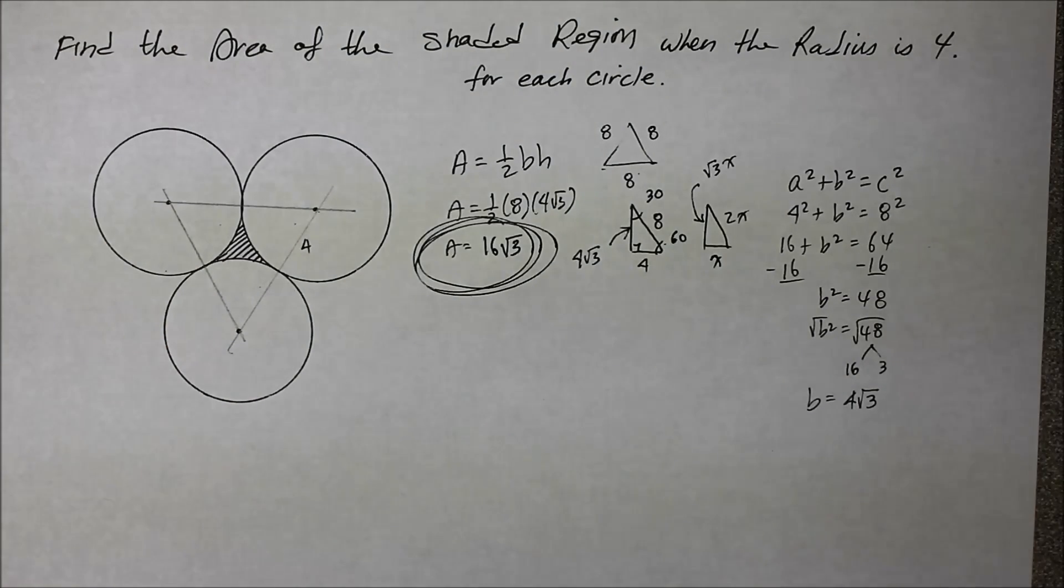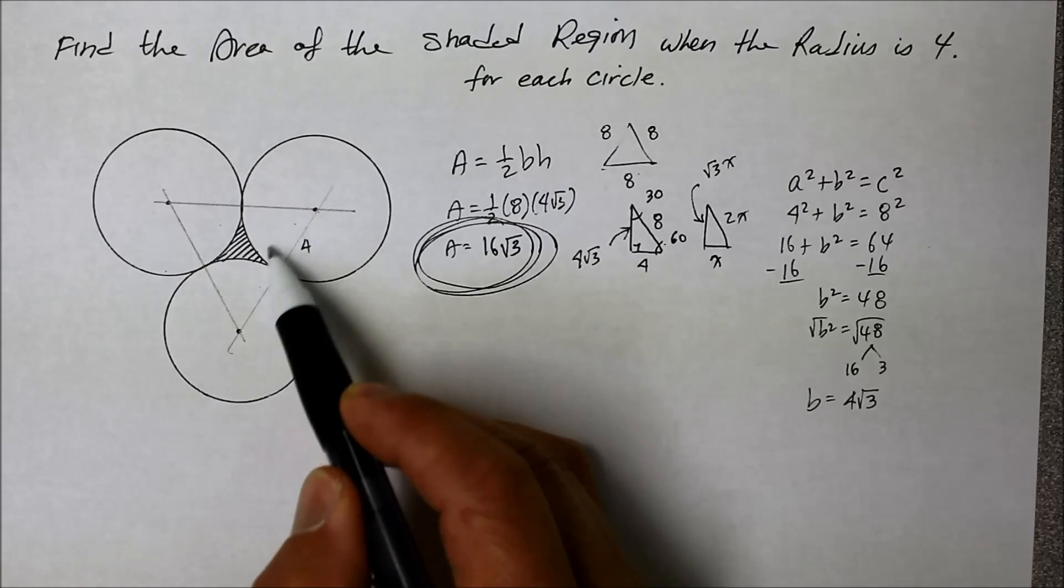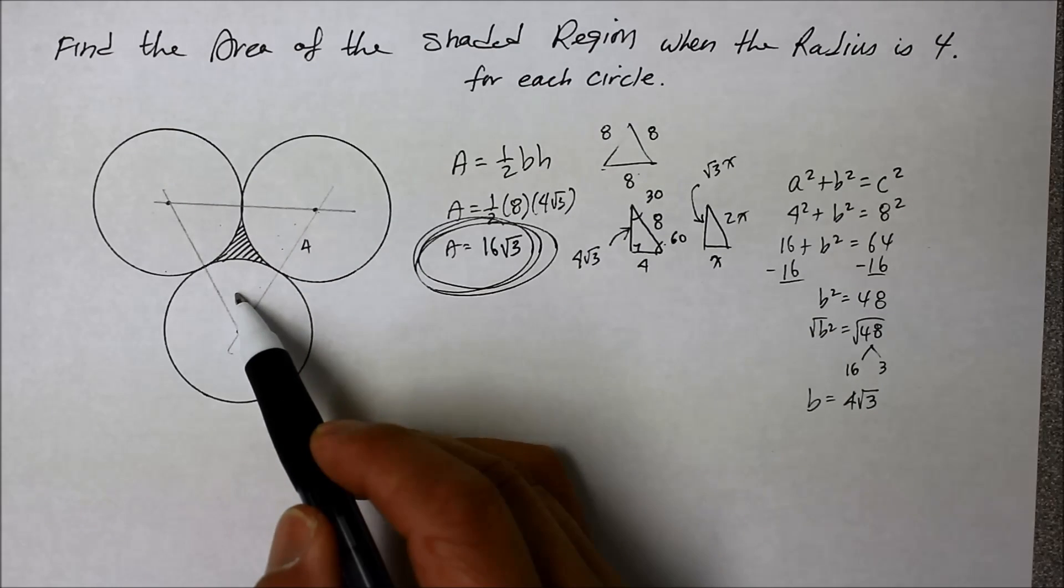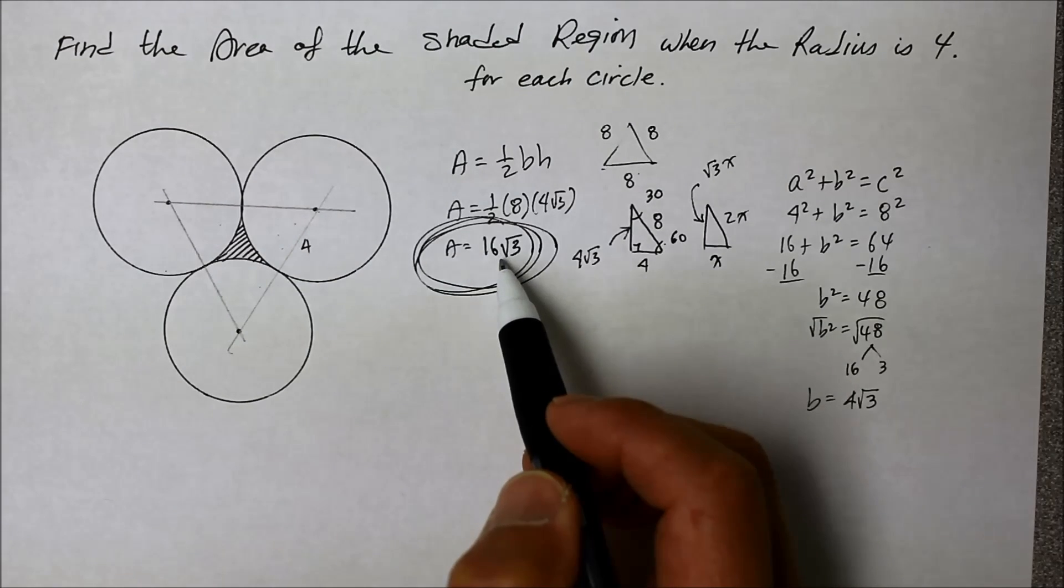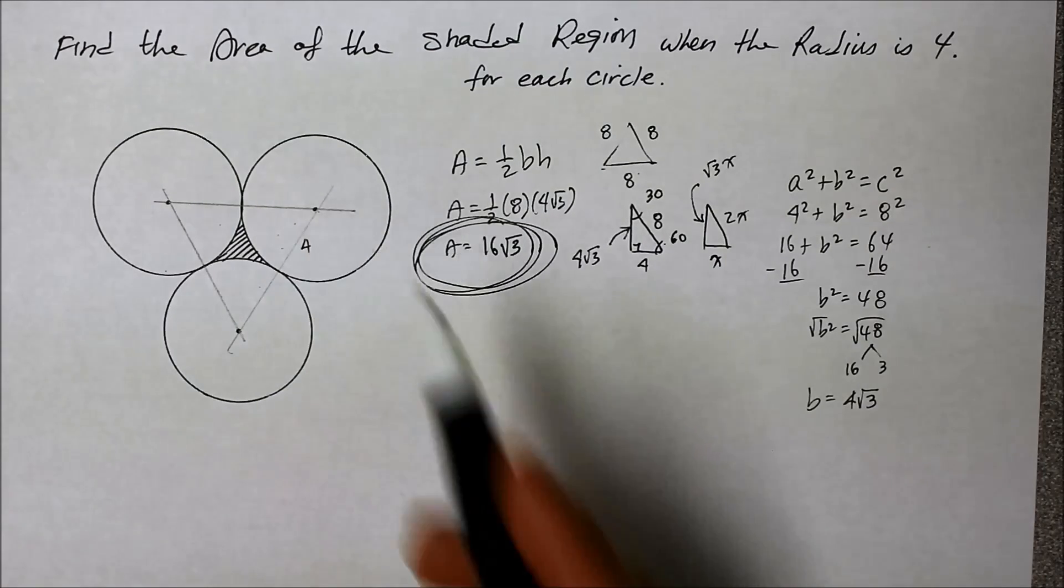So that's the area of the whole triangle that is formed by the 3 vertices and the center of the 3 circles. Now what we need to find is the sectors of each of those circles and multiply by 3 and take it away from the whole triangle equilateral and that will give us the little wedge area here. So how do you find that?